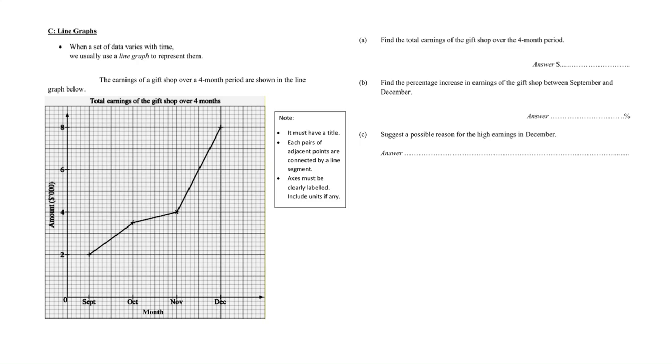Now for line graphs, when a set of data varies with time, that's where we usually use a line graph. For this particular example, we are looking at the earnings of a gift shop over a four-month period, September to December.